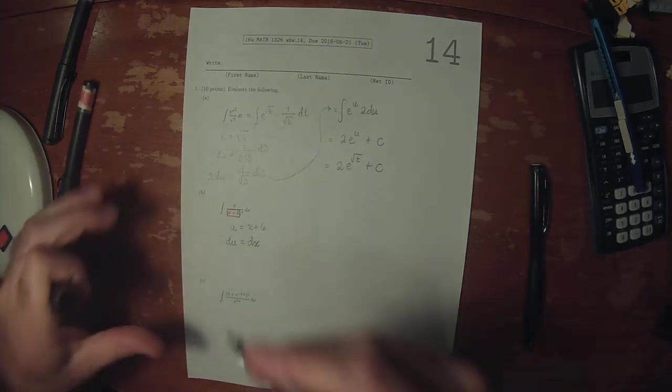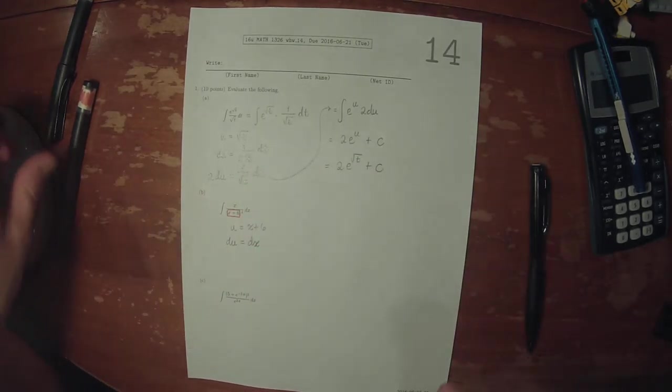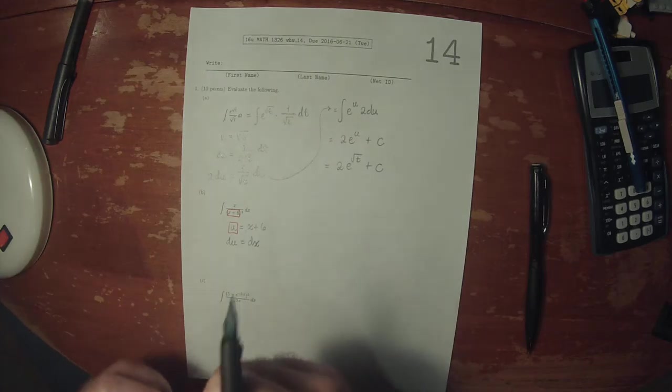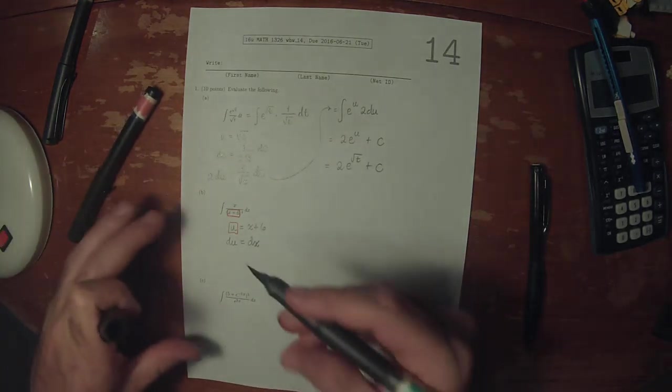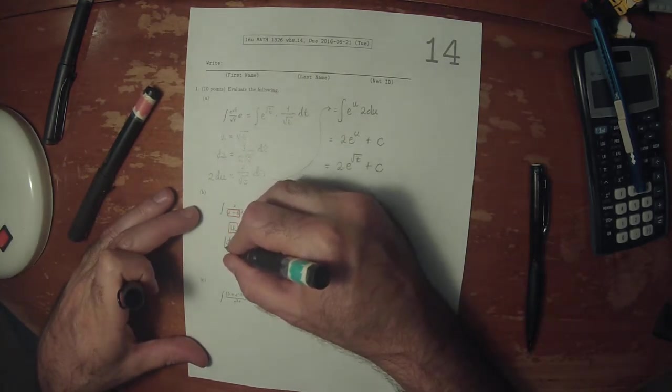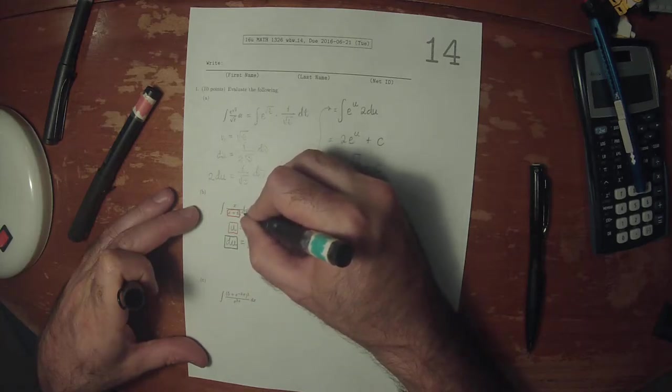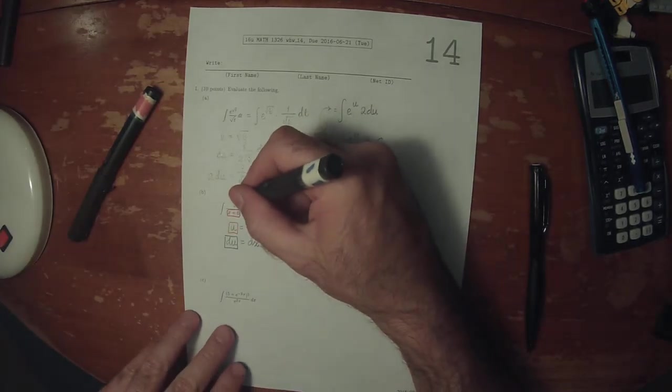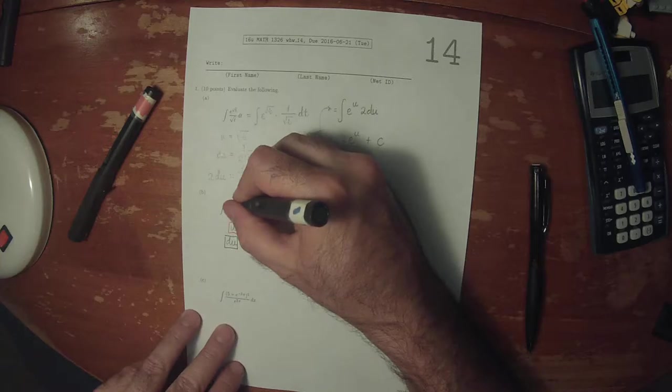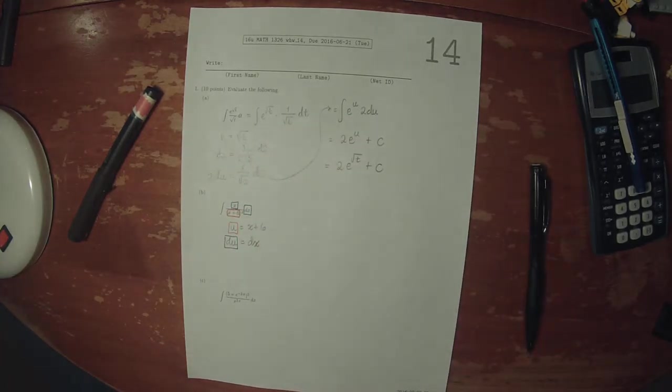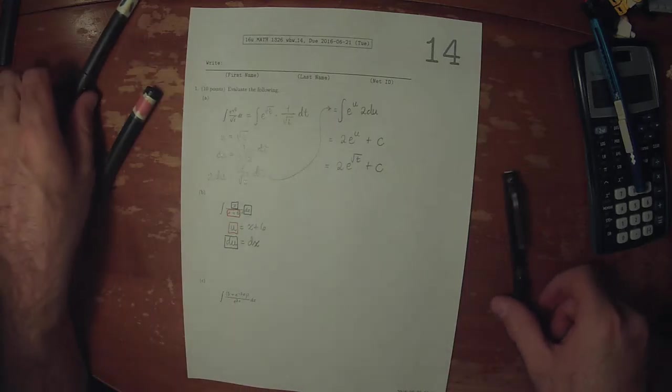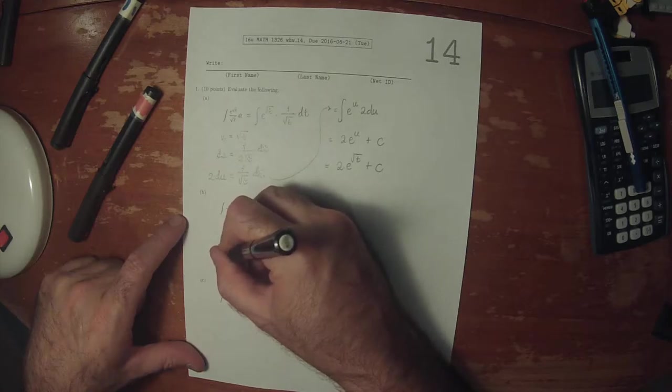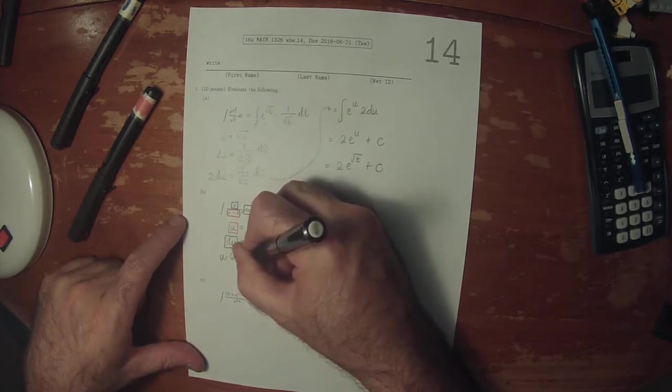And many students regard this example as tricky because this u will cover this x plus 6, and this du goes with this dx. And then many students get stuck here wondering what to do with this x. And the answer is, with this equation you can solve for x. So this is u minus 6 is x.